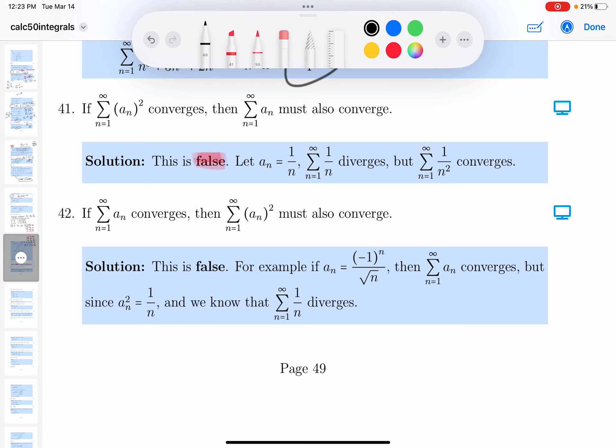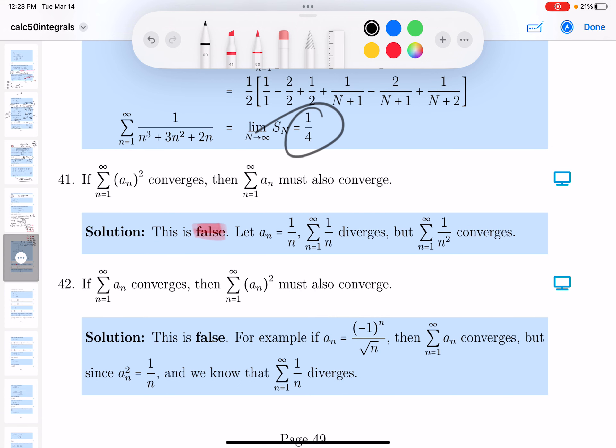It says that if you square the a_n, you have a convergent series. So I'm thinking of something over here. I'm thinking of a_n is equal to 1 over n.